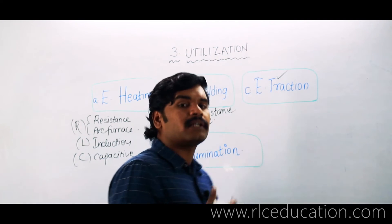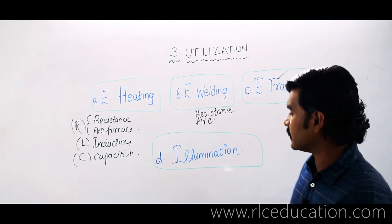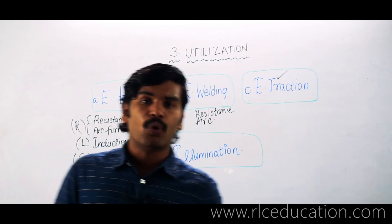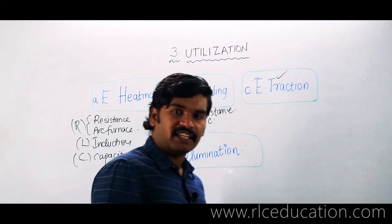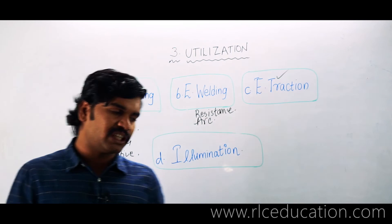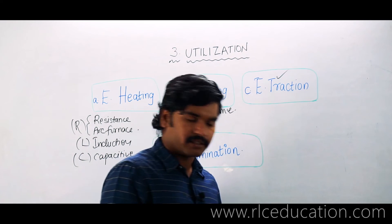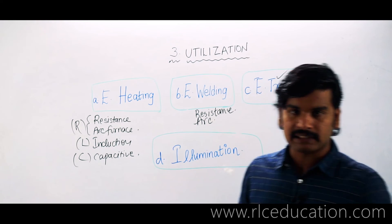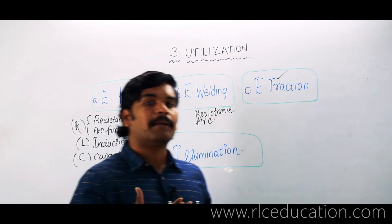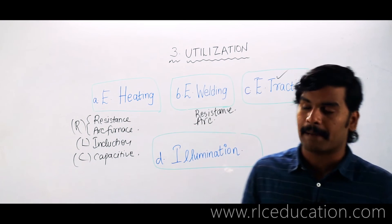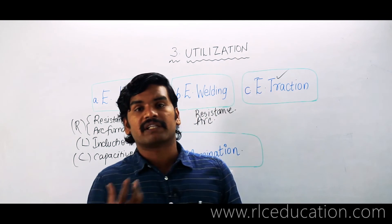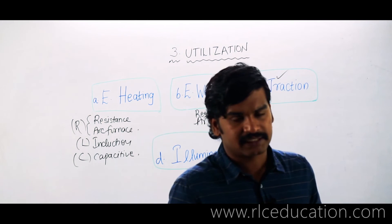Most students feel comfortable in the first three topics, but many find illumination engineering a little difficult compared to others. In illumination engineering, we specifically deal with conversion of electrical energy into light energy, which takes place in a device called a lamp. Lamps can be resistance-based or arc-based, and we will discuss different types: mercury vapor lamps, sodium vapor lamps, low-pressure MV lamps, and LED bulbs.